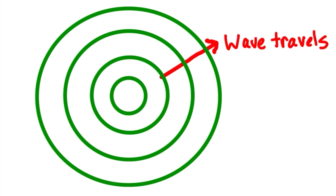The green circles represent the waves starting at the center and traveling radially outward as shown by the red arrow. The atoms oscillate up and down, meaning out of the screen or paper and into the screen or paper.